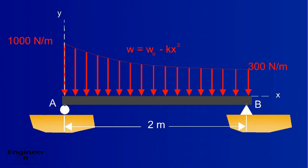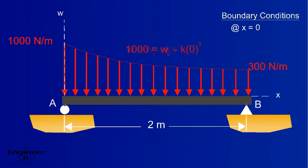Draw axes for reference, using w for the weight as the y-axis. These unknown constants need to be solved for, which can be done using boundary conditions. So when x equals 0, the graph tells us the weight is equal to 1000 newtons per meter.